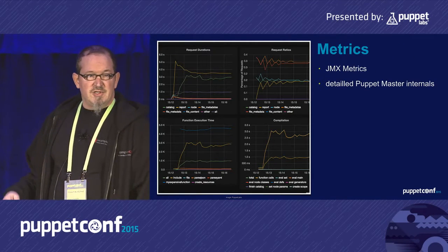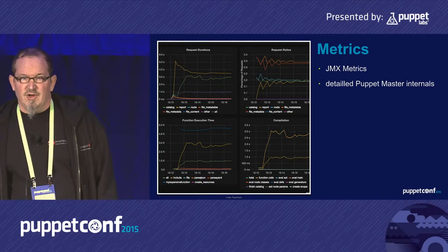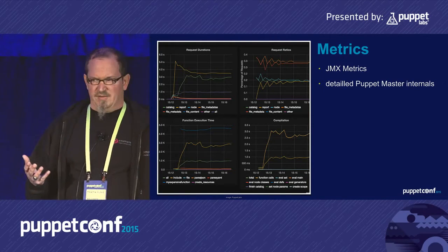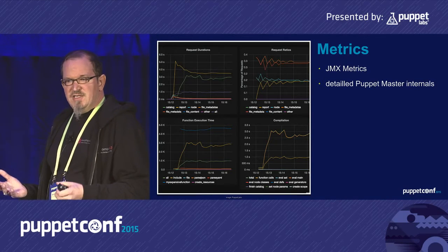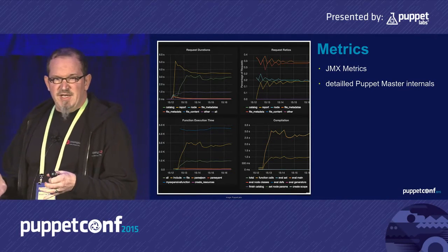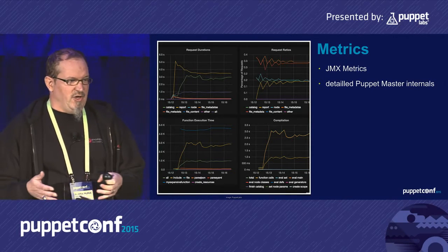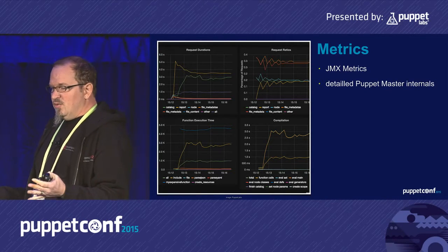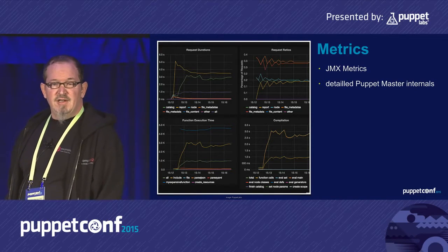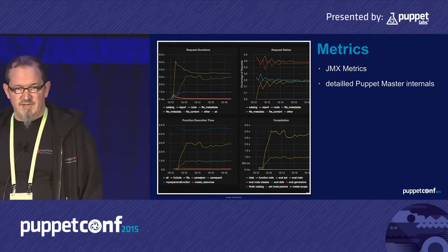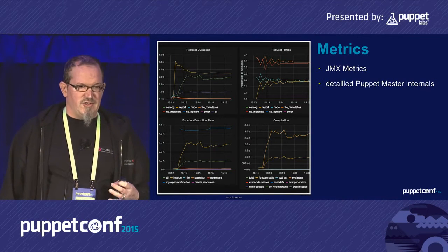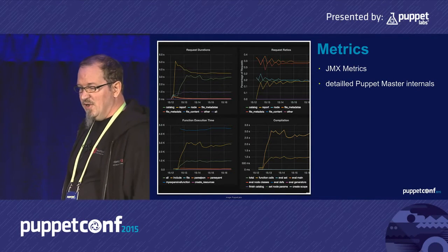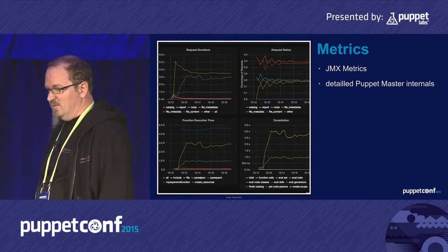The next thing announced at last year's PuppetConf was metrics. Everybody is doing monitoring for when something is not working, but what people also like to see is: what is not working as expected inside my Puppet server? Why does my catalog compilation take this long? You can easily find out — oh, I have a function that takes a huge amount of time to return data — so you know where to dig into it. It's a very positive way to analyze the behavior of your Puppet master.